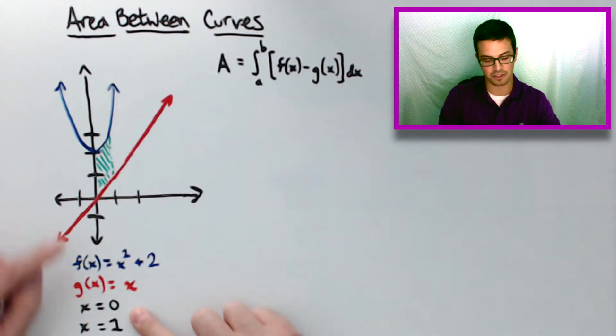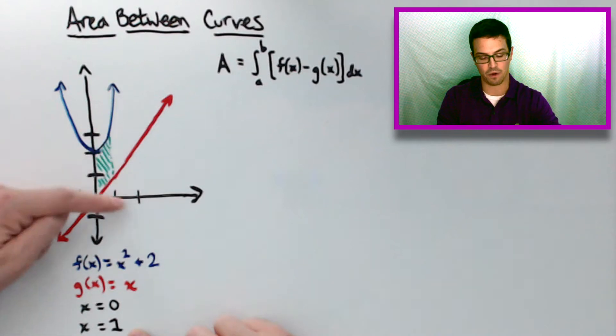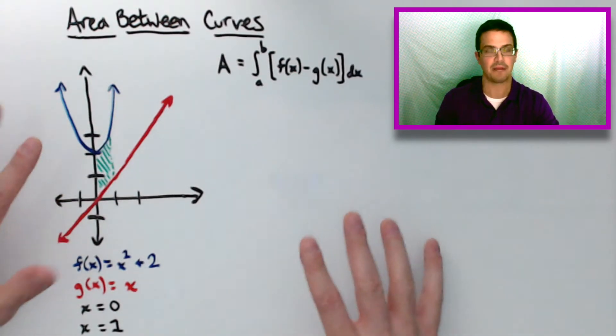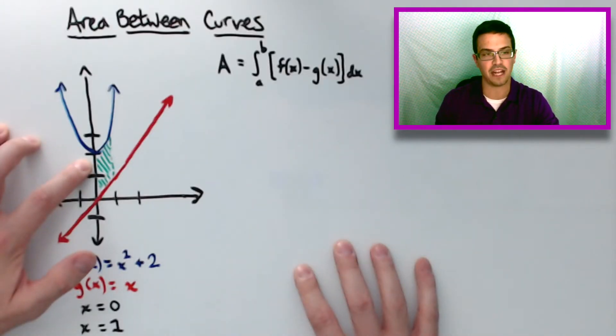And then it's bounded by x equals 0, so that's just basically this line right here, the y-axis. And then x equals 1 right here. So it's represented basically by this green shaded part right here. So we're trying to find the area of that green shaded part.